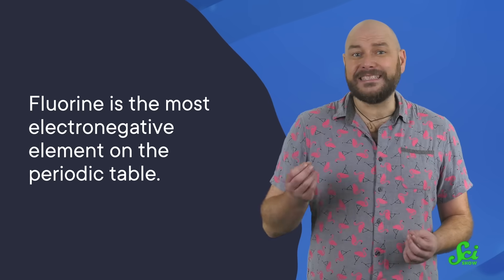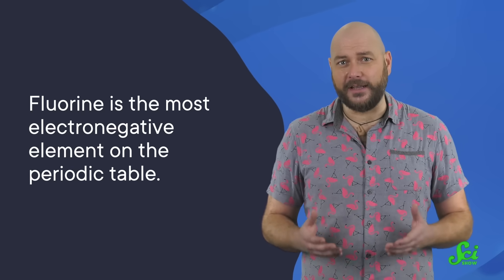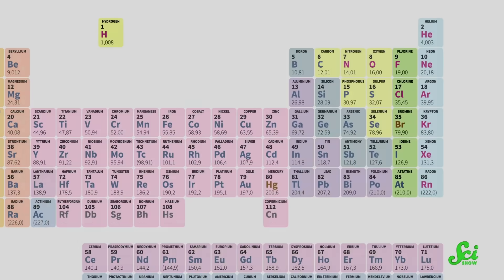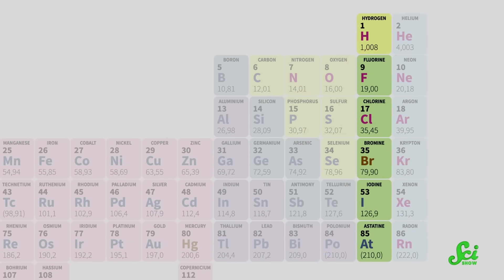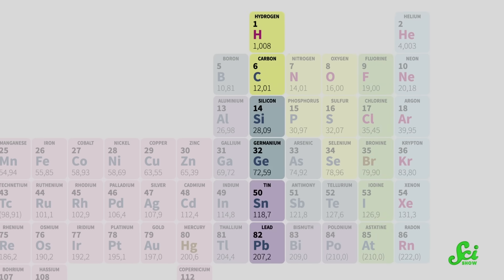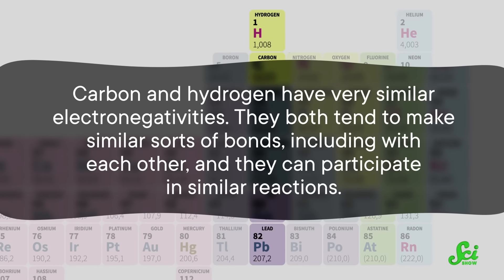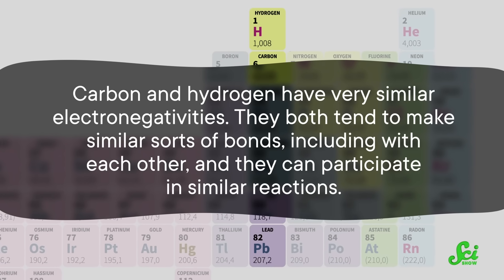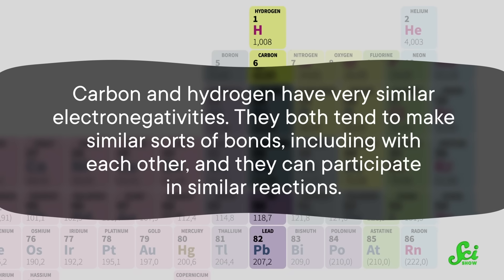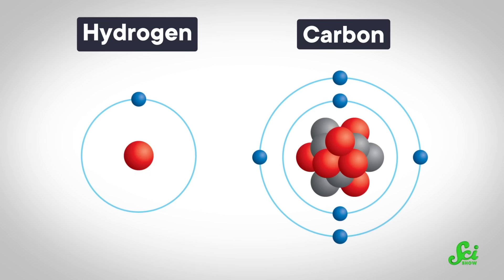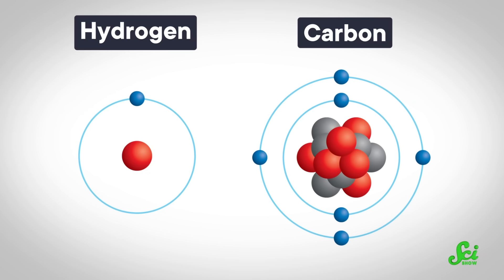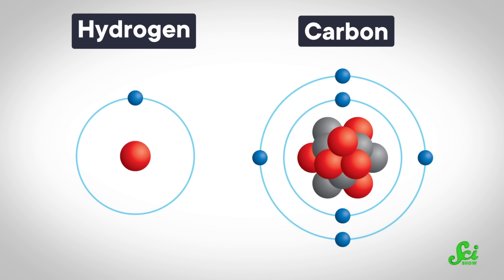On the other hand, hydrogen differs from fluorine in a big way, in that fluorine is the most electronegative element on the periodic table — meaning the greediest and most likely to hog electrons from its bonding partners. If hydrogen were placed above fluorine, you'd expect it to be even more electronegative, but it's actually much better at sharing. That brings us back to group 14, the carbon group. Carbon and hydrogen have very similar electronegativities; they both tend to make similar sorts of bonds, including with each other, and they can participate in similar reactions.